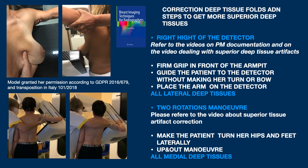Let's move on to correction: to have more deep upper tissues, including when possible the latissimus dorsi at axillary level, and at the same time minimize — if not eliminate — folds. The detector height has to be right. I advise you to review the videos on pectoralis muscle documentation and correction of artifacts in upper tissues. Starting with the patient medial to the detector, hold her firmly at the front of the axilla, drive her forward on the detector without making her turn or bow, thus bringing all the deep tissues onto the detector.